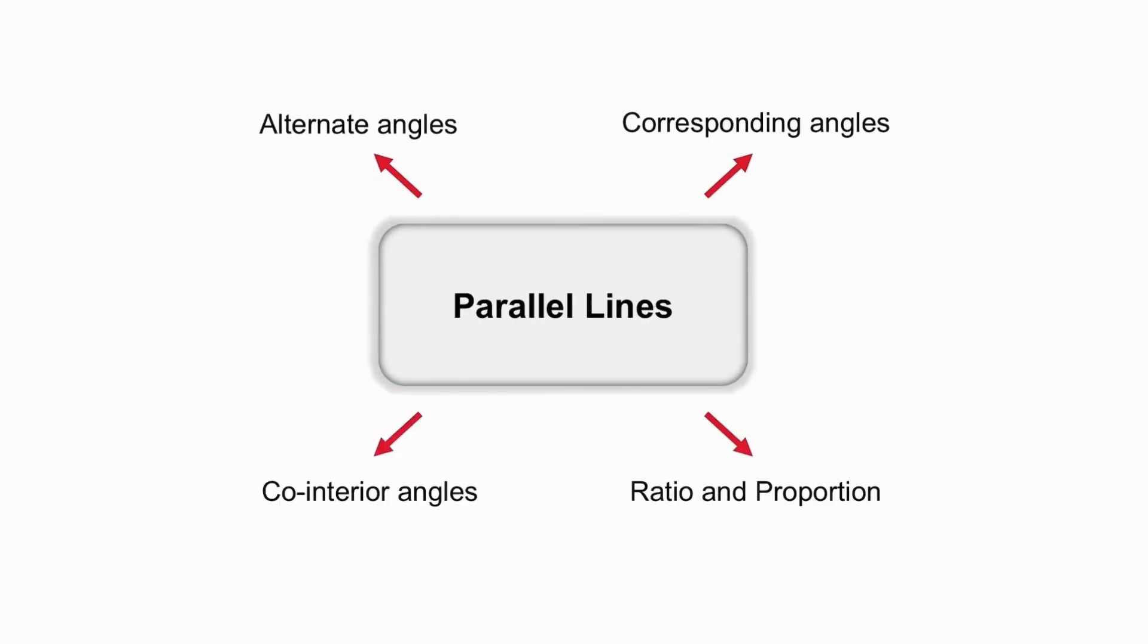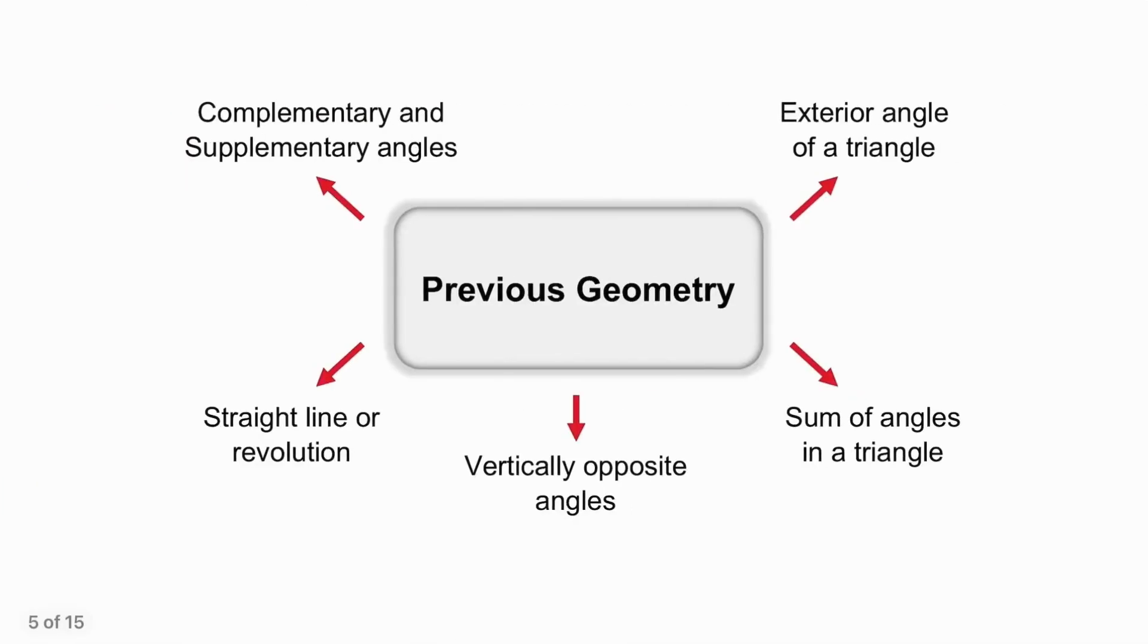If you see the problem contains parallel lines, think of alternate angles being equal, corresponding angles being equal, and co-interior angles being supplementary. You also need to consider triangles that might be in proportion so that you can use the ratio and proportion theorem. And then, of course, there is all the geometry from previous grades.